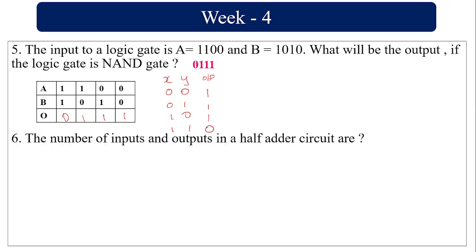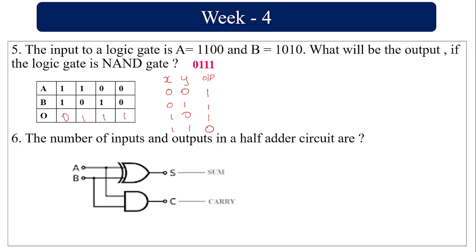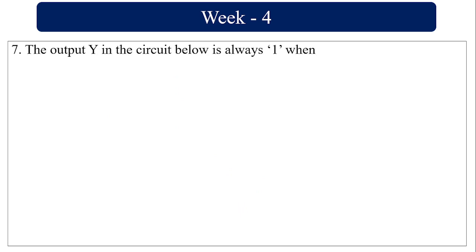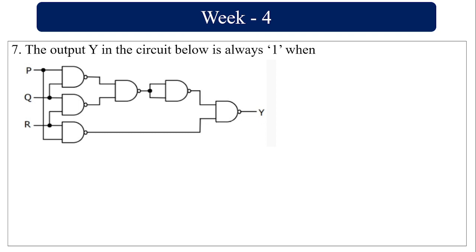The number of inputs and outputs in a half adder circuit: the half adder has two inputs, A and B. The number of inputs is two. The outputs are Sum and Carry, so two outputs. Sum = A⊕B and Carry = A·B. So a half adder has two inputs and two outputs.